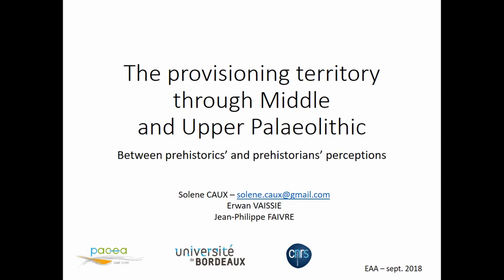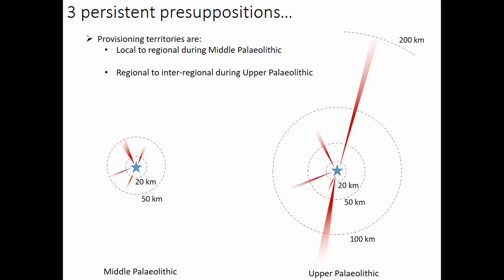This is the occasion to present you this question about the correlation or the differences between the Middle and Upper Paleolithic regarding their provisioning territory. The transition between Middle and Upper Paleolithic was full of presuppositions, because the Upper Paleolithic was defined in comparison with the Middle one. Quickly, we have three persistent presuppositions.